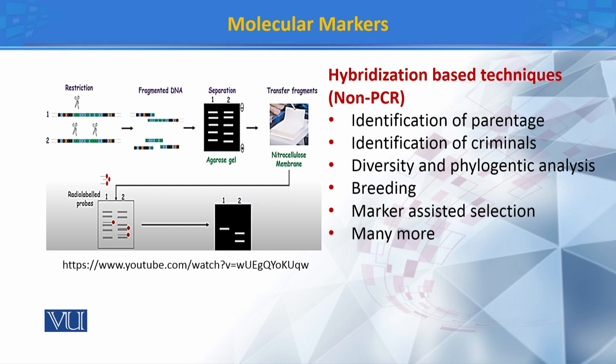اس کے بعد fragments کو nitrocellulose membrane کے اوپر transfer کیا گیا۔ پھر Southern blotting کے ذریعے radioactive probes کا استعمال کیا گیا — یہ radioactive probes restriction sites سے بنے fragments کی specific جگہ پر attach ہوتے ہیں۔ اس کو check کرنے کے لیے X-rays کا استعمال کیا جاتا ہے، اور اس طریقے سے different individuals کی restriction sites کے اندر variations کو compare کیا جاتا ہے۔ Closely related organisms کی restriction sites میں similarity ہوتی ہے، جبکہ distantly related organisms کی restriction sites میں differences ہوتے ہیں۔